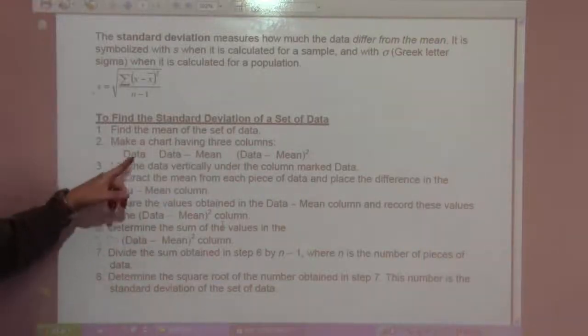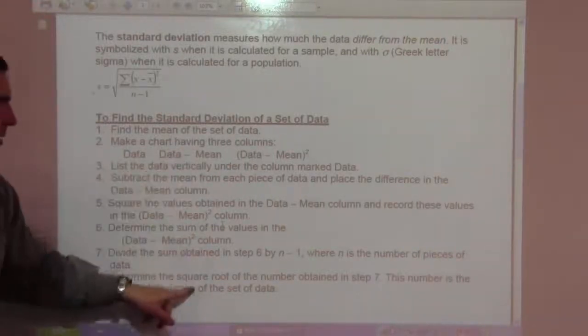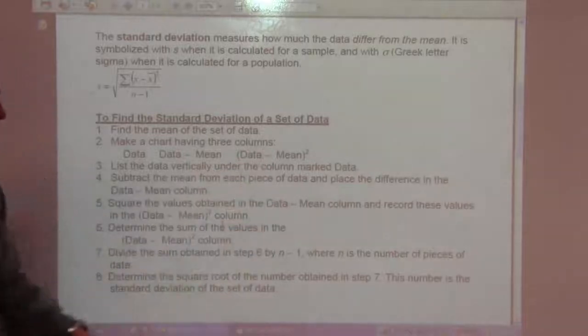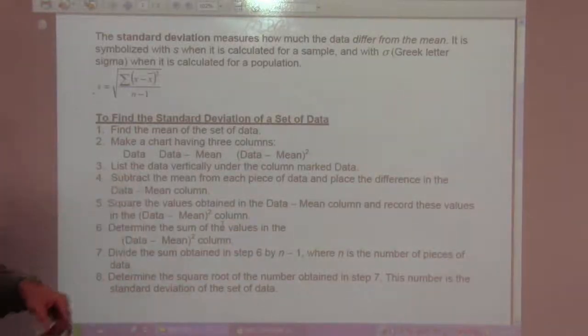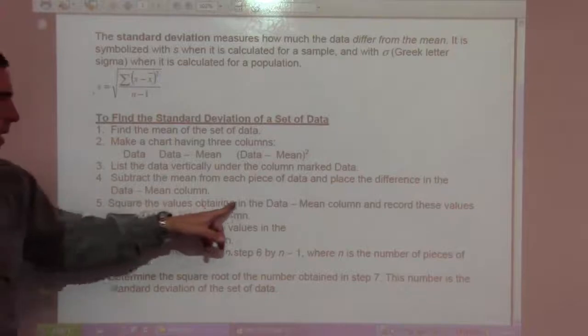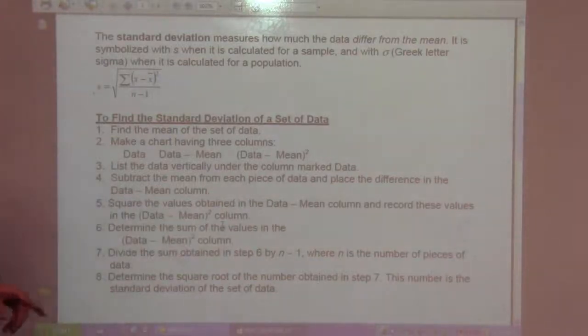Make a chart having three columns: the data itself, the data minus mean, and the data minus mean squared. List the data vertically under the columns marked data. Subtract the mean from each piece of the data and place the difference in the data minus mean column. Square the values obtained in the data minus mean column and record these values in the data minus mean squared column.